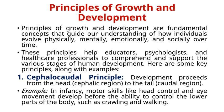Here are some key principles. First, the cephalocaudal principle: development proceeds from the head (cephalic region) to the tail (caudal region). For example, in infancy, motor skills like head control and eye movement develop before the ability to control the lower parts of the body, such as crawling and walking.